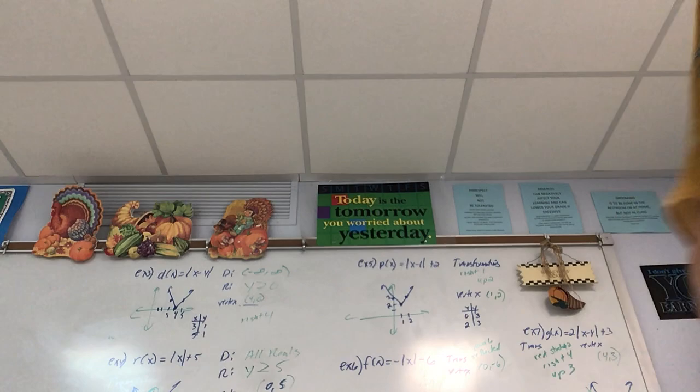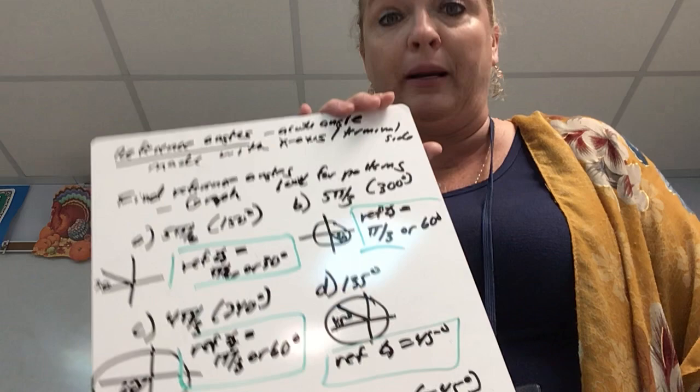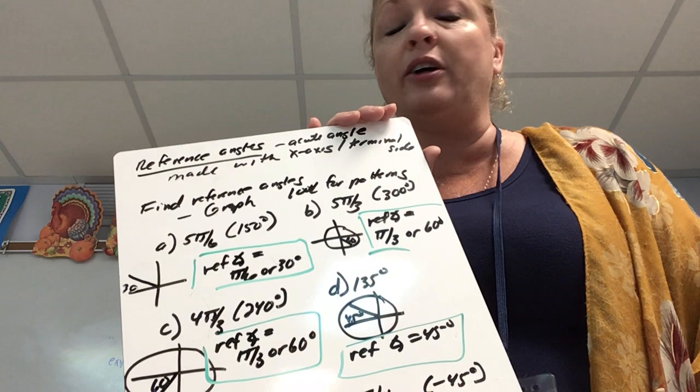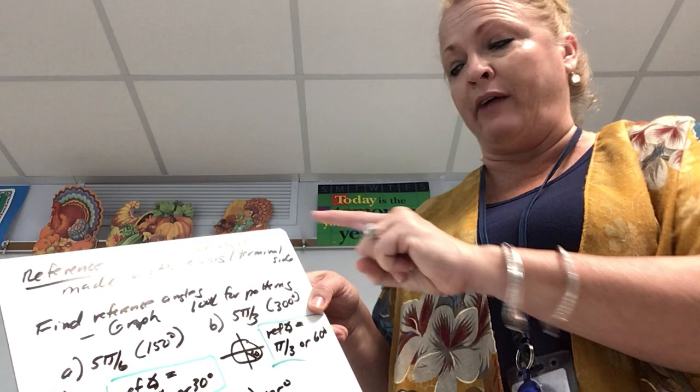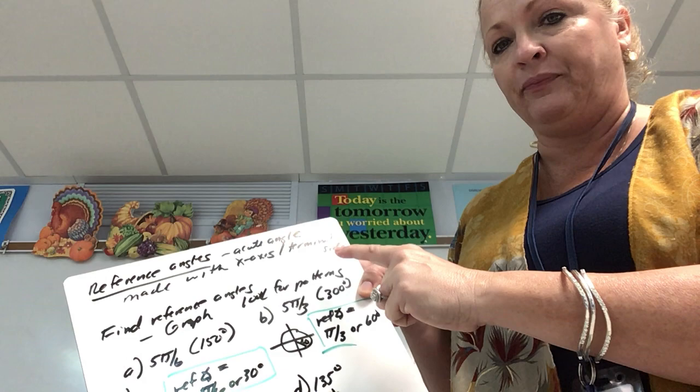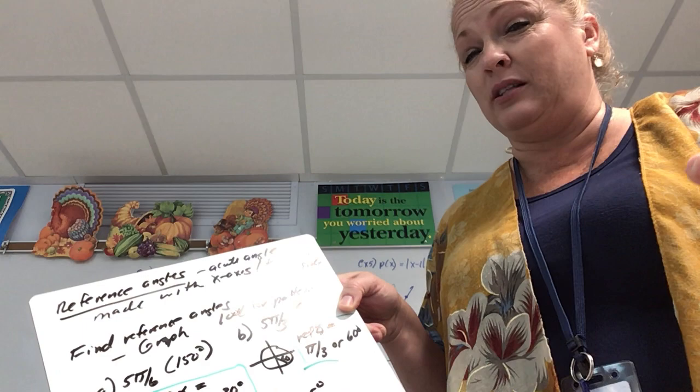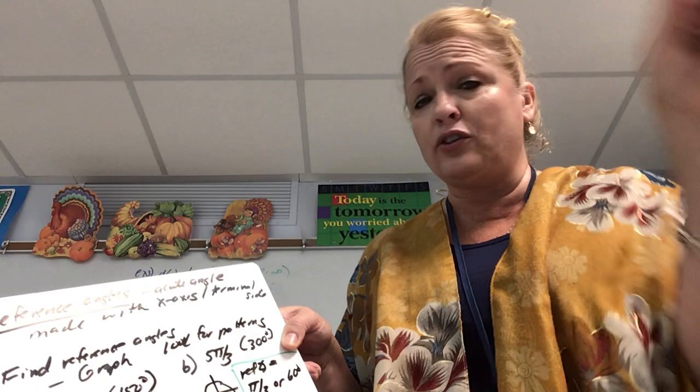The last topic for this set of notes is reference angles — we are building up to the next lesson where we put all of this together and find things like the sine of 5π/4. Reference angles are always the acute angle made with the x-axis. When we make an acute angle with the x-axis, we can form a triangle, and these triangles come from 30-60-90 and 45-45-90 special right triangles.